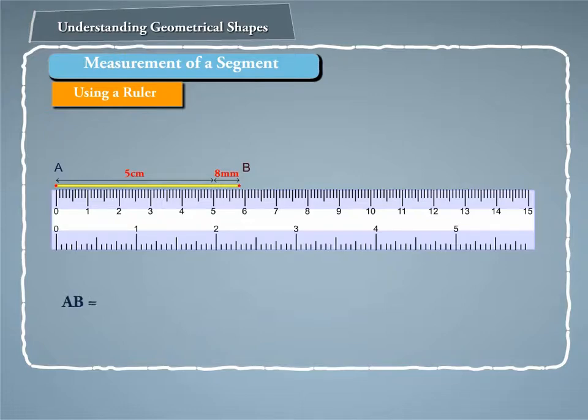That is, AB contains 5 full centimeters and 8 millimeters. We say that the length of AB is 5.8 centimeters.